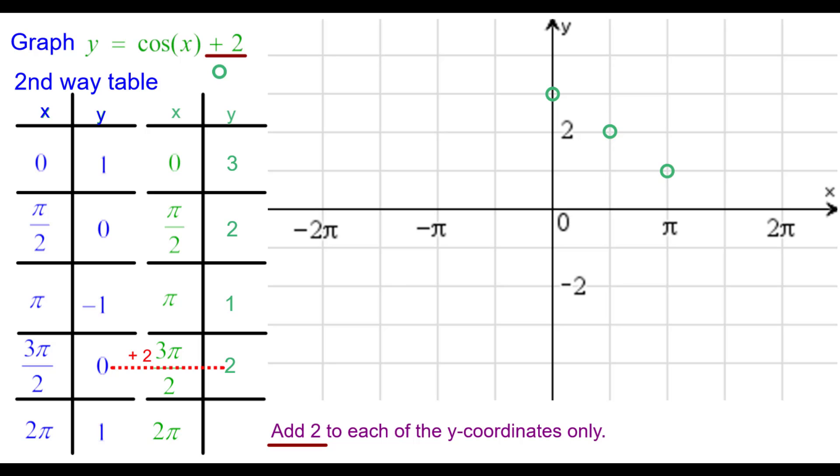Zero plus two is two, three pi over two comma two. And one plus two is three, over to the right, two pi, up to three.